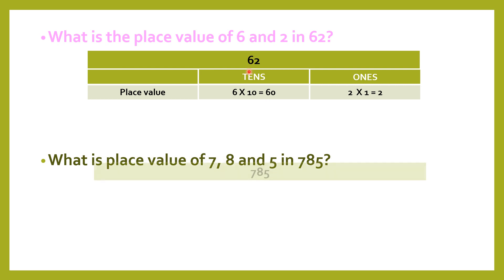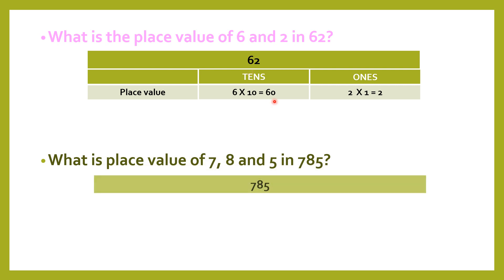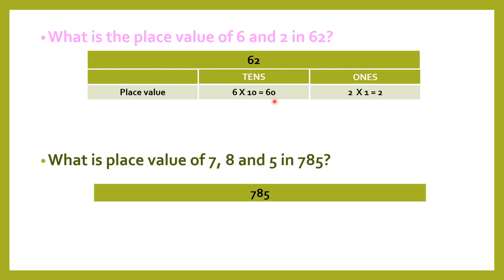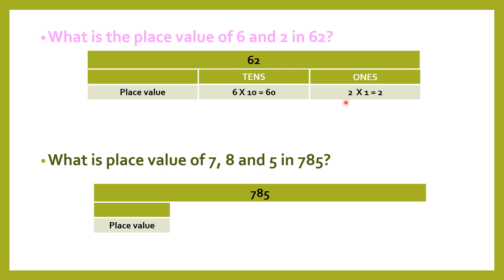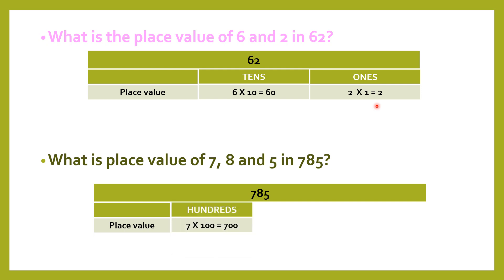So we will multiply 6 by 10, it becomes 60. Place value of 6 in 62 is 60. And since ones position value is 1, we multiply 2 by 1, so it remains 2. The place value of 2 in 62 is 2.